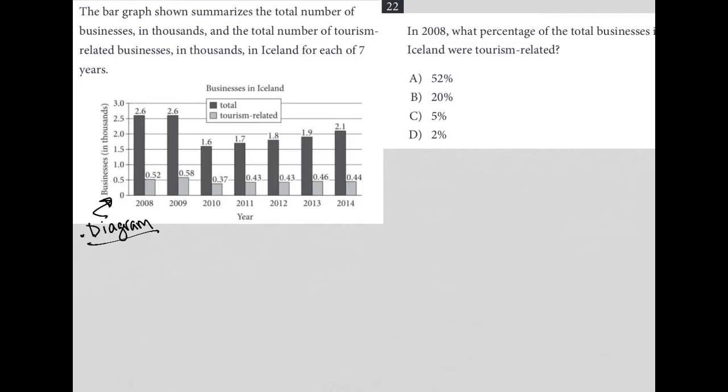The information here says that the bar graph shown summarizes the total number of businesses in thousands and the total number of tourism-related businesses in thousands in Iceland for each of seven years. So whenever I see a graph, a table, I like to use a method that I call the pinpoint method, which in this case would be let's just look at a certain year and see if I can understand what the bars in that year represent.